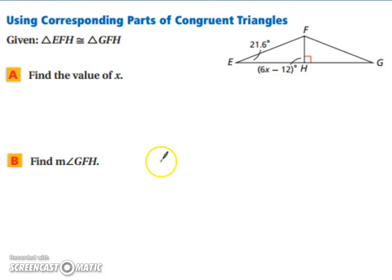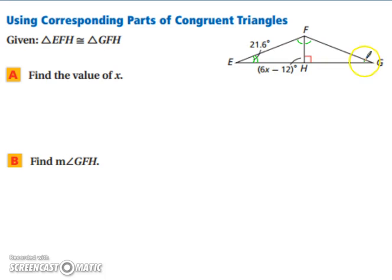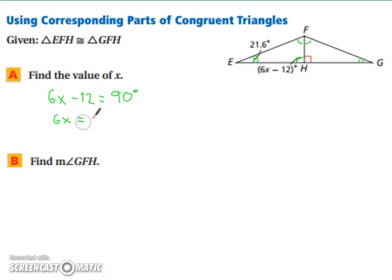Let's try using corresponding parts of congruent triangles to find the value of X. We know that triangle EFH is congruent to triangle GFH, so we know that these two angles are congruent. E and G go together, our two angle Fs go together, and both of our Hs are the same — so if this one is 90 degrees, so is this one. We have 6X minus 12 equals 90 degrees. Adding 12 to both sides gives us 102, then dividing by 6 on both sides leaves us with X equals 17.